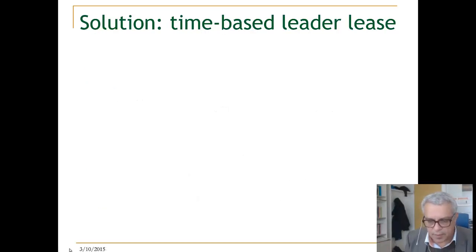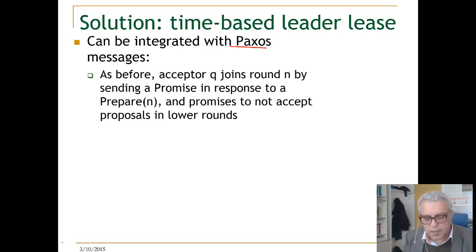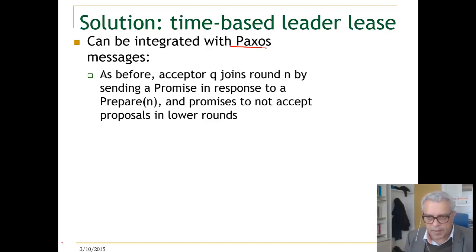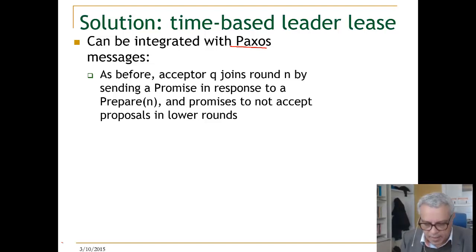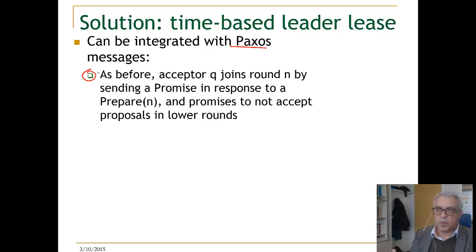Let us look at the time-based leader lease again. This can be integrated into Paxos. A proposer proposes to become a leader, starting a Paxos round at round N. As before, acceptor Q joins round N by sending a promise in response to a prepare. The acceptors, in the normal case, promise not to accept any proposal with a lower round number — this is as usual.